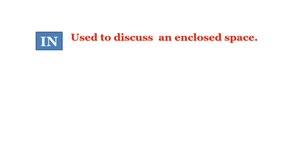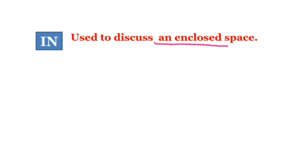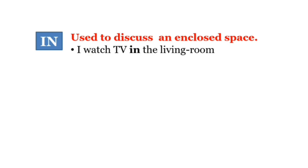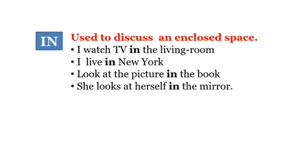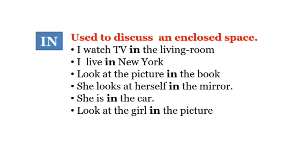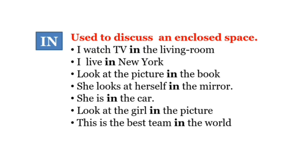Next, we talk about 'in'. In is used to discuss an enclosed space. An enclosed space means वो जगह जहाँ कोई boundary है, चार दीवारी है, या जिसकी कोई limit है। Enclosed space में किसी चीज़ की location बताने के लिए 'in' का इस्तेमाल किया जाता है। For example: I watch TV in the living room. I live in New York. Look at the picture in the book. She looks at herself in the mirror. She is in the car. Look at the girl in the picture. This is the best team in the world.